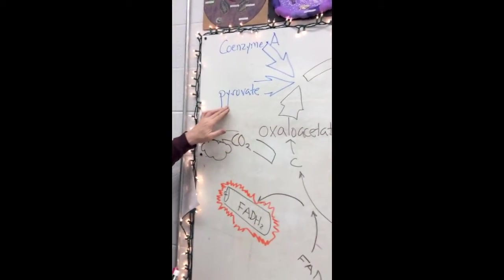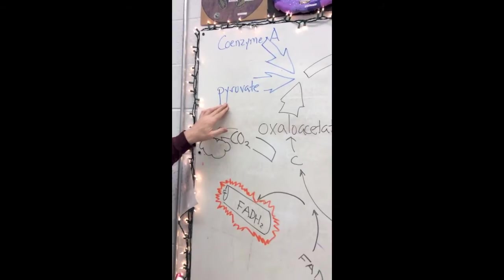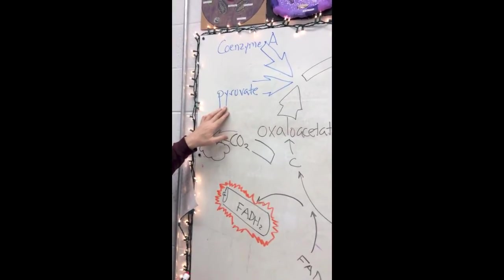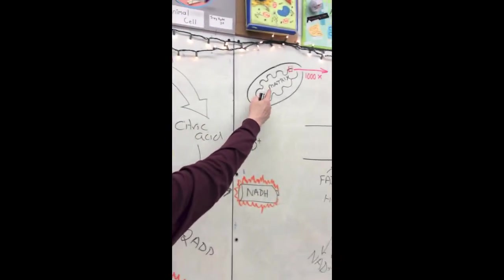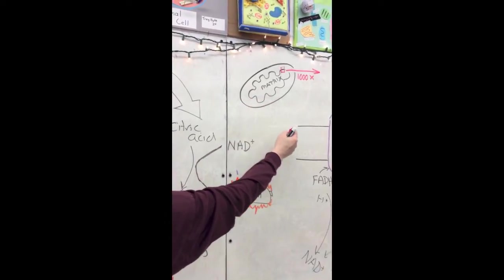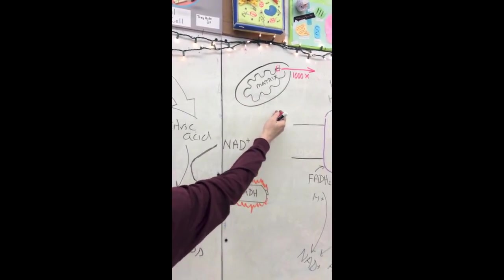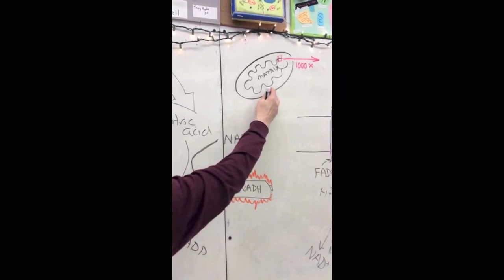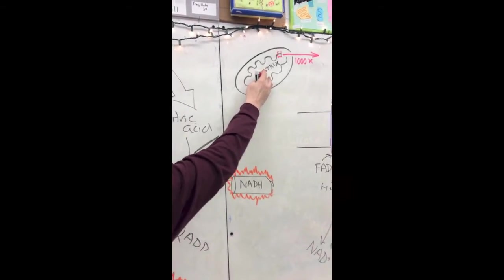Pyruvate enters the Krebs cycle, which takes place in the matrix of the mitochondria. That can be seen on this diagram right here. Actually, the pyruvate comes out of the cytoplasm, goes through some protein ports into the mitochondria, and is conveyed into the matrix.